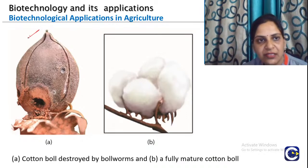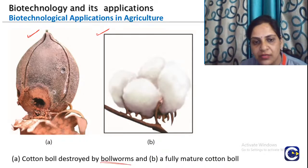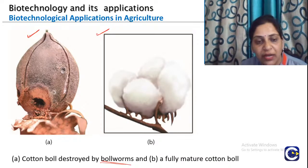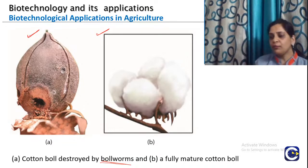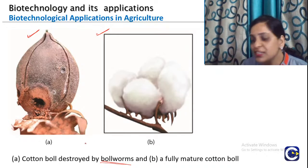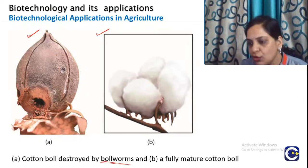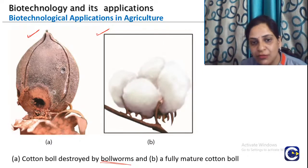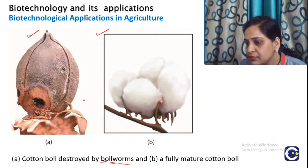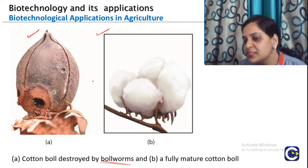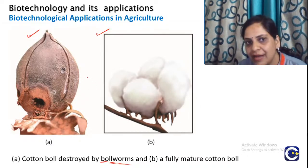In this diagram, we are seeing cotton balls destroyed by bollworms — there are two terms: cotton bollworm and cotton corn borer, and especially these are Lepidopterans — moths and caterpillar pests. This is a fully mature cotton ball, and you can see how it is spoiled by the bollworms. A gene is inserted from a bacterium — isolated from a bacterium — into the cotton plant, which provides resistance against this pest. Whenever the pest digests part of the crop, it is going to die.